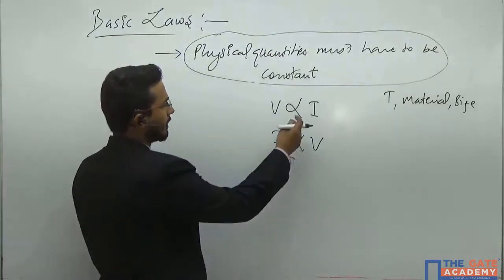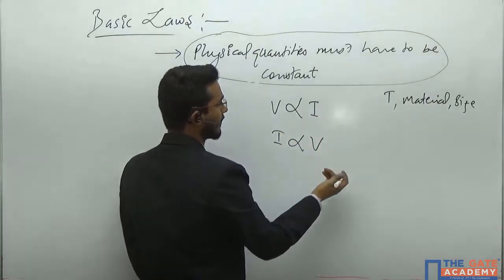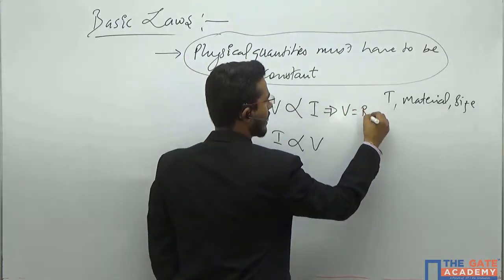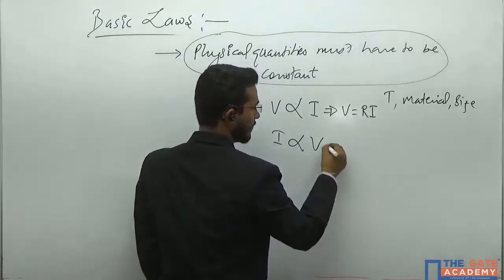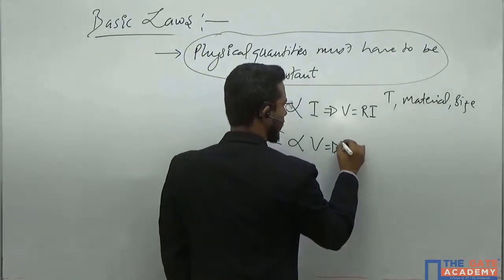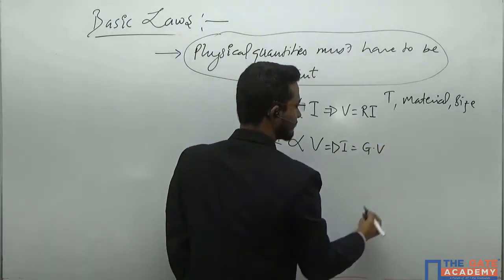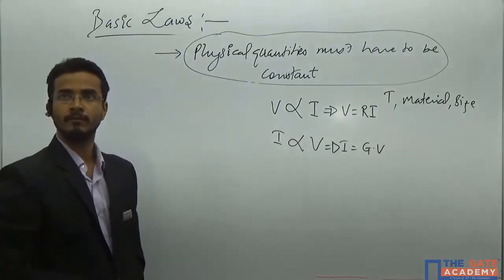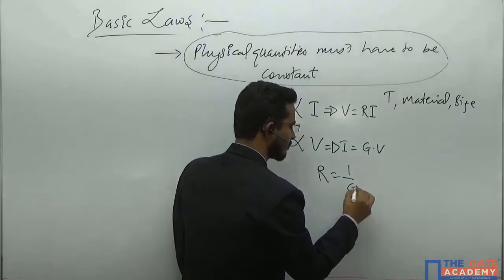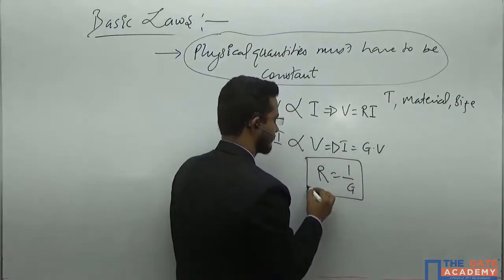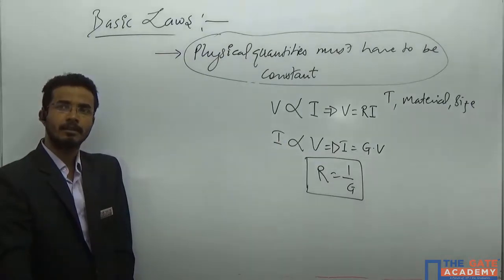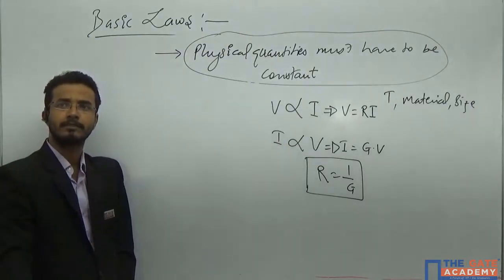When you remove the proportionality constant, you get V equals R times I. And when you remove the proportionality constant from the other relation, you get I equals G times V. Here R will be 1 upon G, where R is the resistance and G is the conductance.